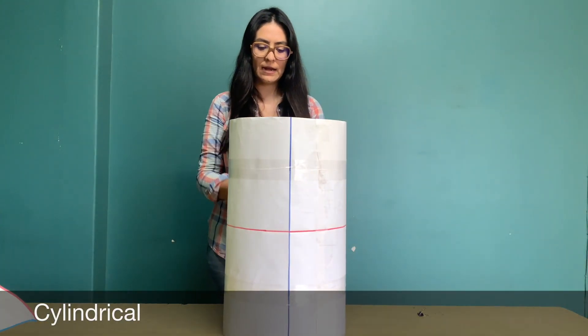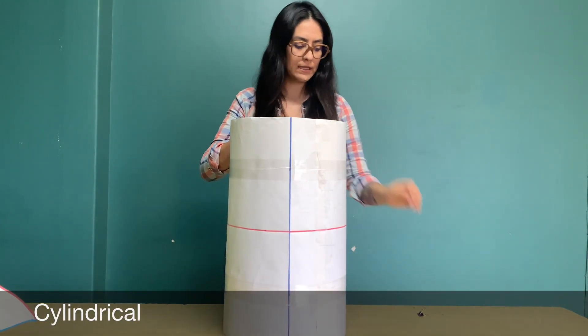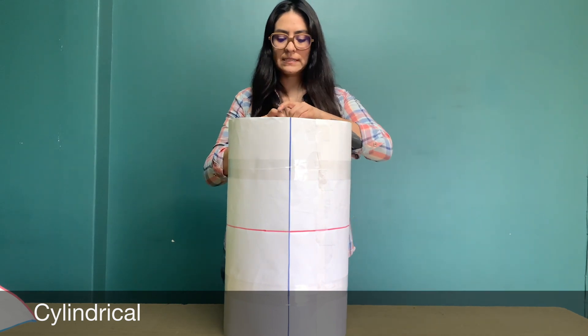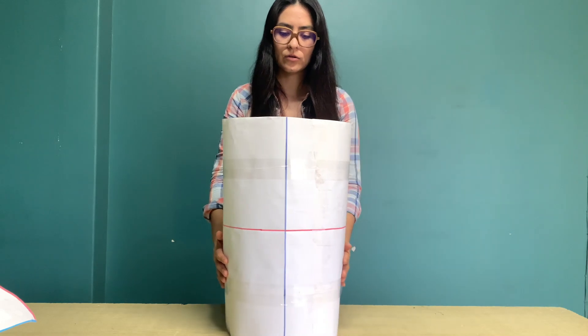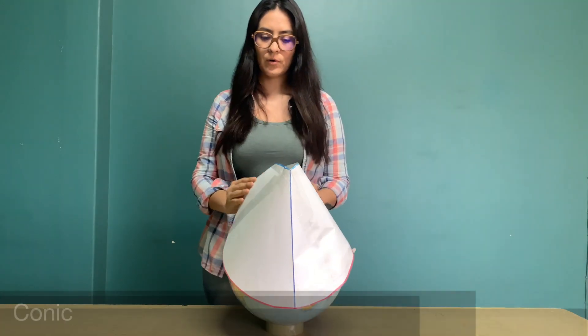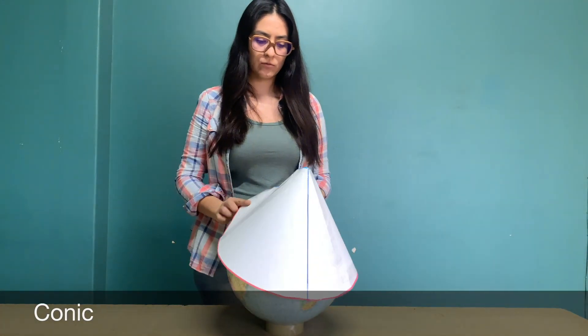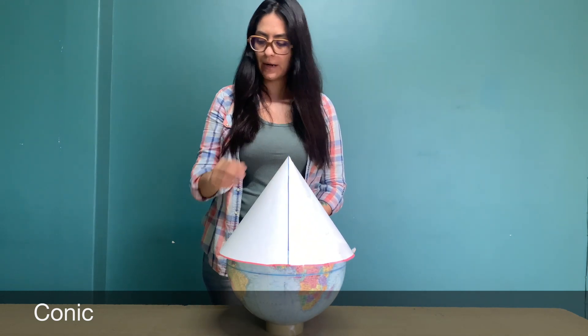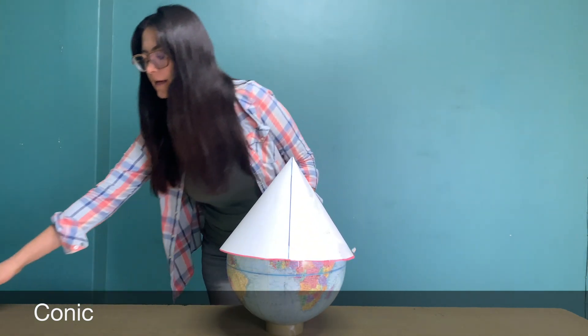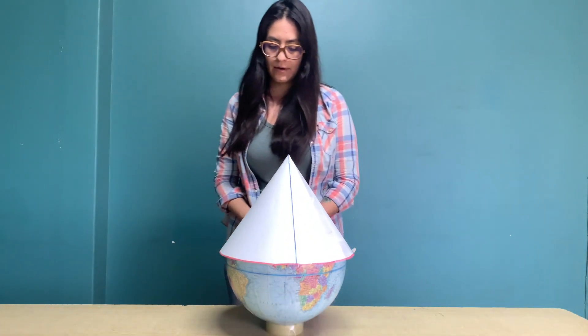The Mercator projection is one of the most common cylindrical projections, and the equator is usually its line of tangency. The conic projection is tangent to the globe along a line of latitude. The meridians are projected onto the conical surface meeting at the apex or point of the cone.